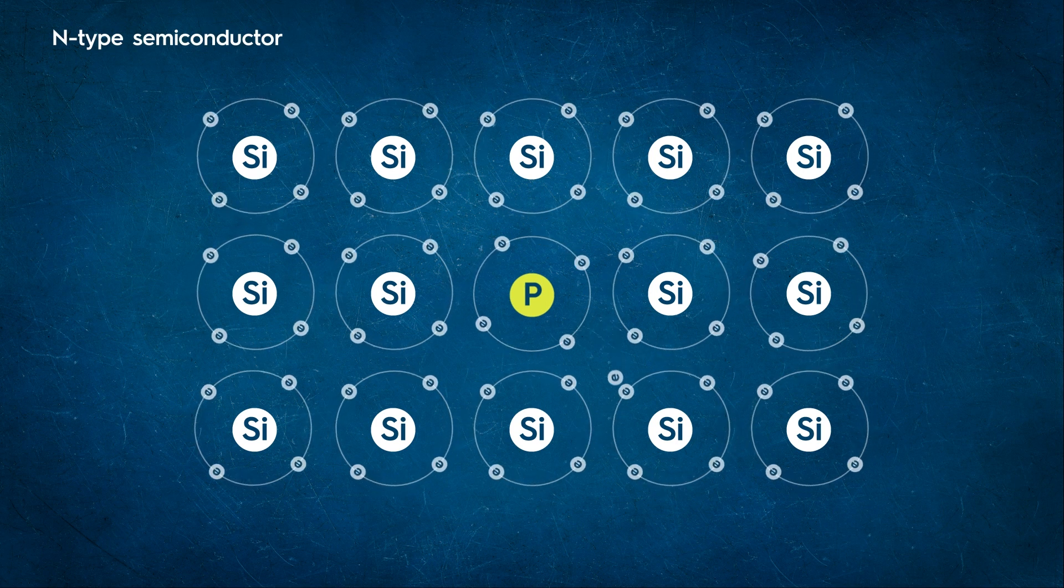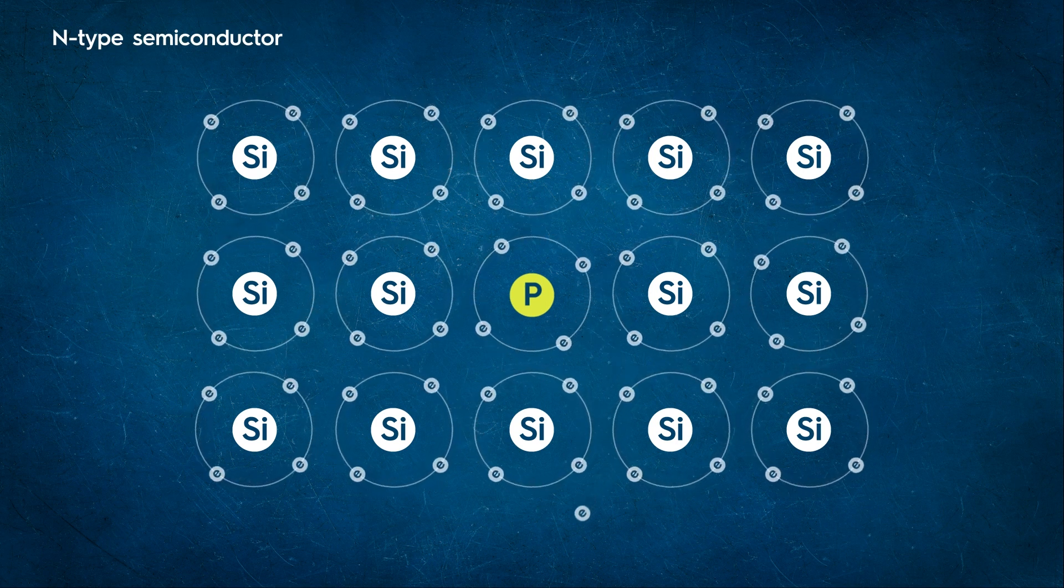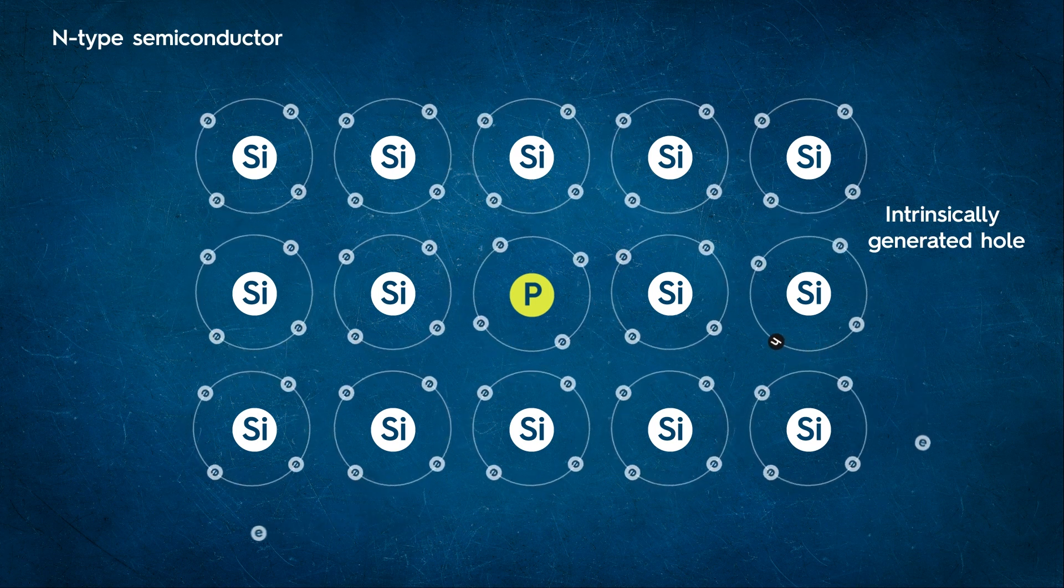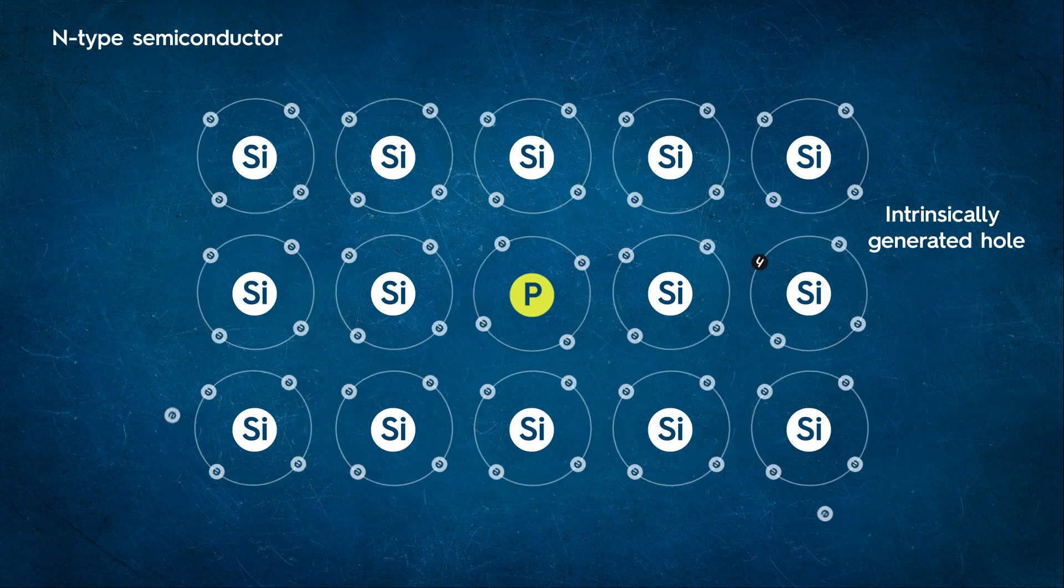Total number of electrons is the sum of electrons contributed by pentavalent donors and those generated intrinsically. But holes are generated only due to intrinsic sources.